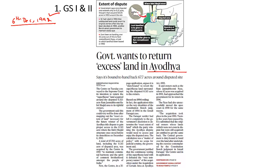The map shown here marks the Babri Masjid site. The small yellow patch is the core disputed area, measuring around 0.31 acres. The current title dispute being fought between multiple organizations at the Supreme Court is related to this disputed area shown on the map.